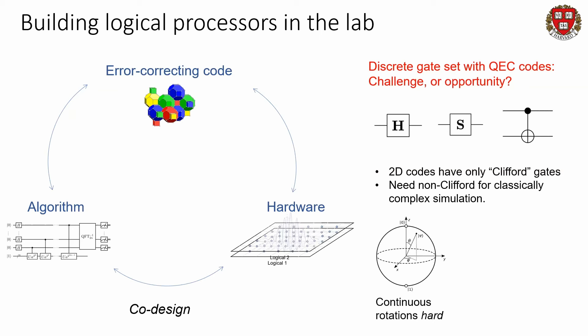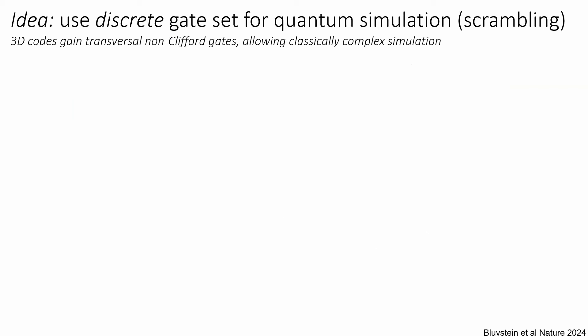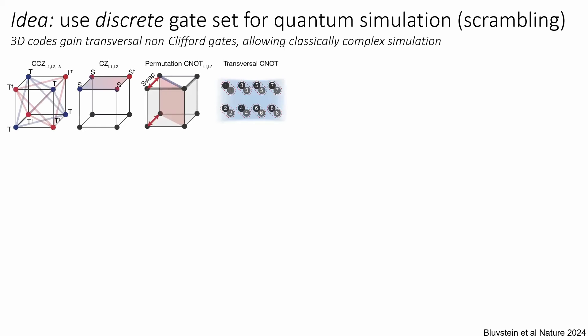Motivated by this, we're studying quantum simulations where we try to build interesting quantum simulations out of discrete digital building blocks and see if we can simulate something more precisely this way. We made 3D error-correcting codes — very similar to the 2D codes discussed earlier, but they gain more types of operations, including the ability to natively do non-Clifford operations. We make 48 of them and start to entangle them on a hypercube, doing very complex non-Clifford gates and studying how we can scramble information rapidly and get rapid entanglement growth in the system. There are interesting links to black hole dynamics in terms of fast scramblers.